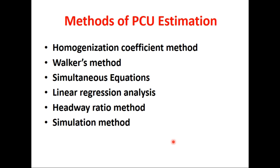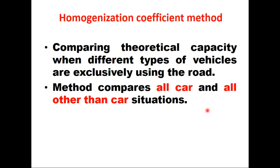There are several methods available in literature to find PCU factors for different types of vehicles. These methods differ for multilane highways, urban roads, and intersections. On inter-urban highways, there are 6–7 methods: Homogenization Coefficient method, Walker's method, Simultaneous Equations method, Linear Regression method, Headway Ratio method, and Simulation method. In the Homogenization Coefficient method, which is a very old method, theoretical capacities are compared when different types of vehicles are exclusively using the road.